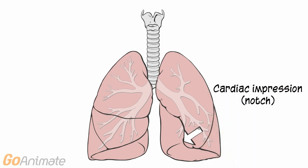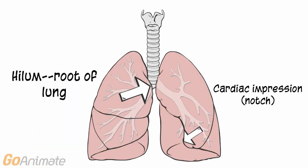Some other structures include the cardiac impression, or notch, and the hilum, or root, of the lung, where the vessels enter.